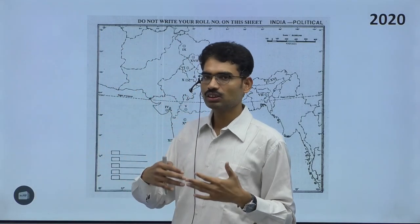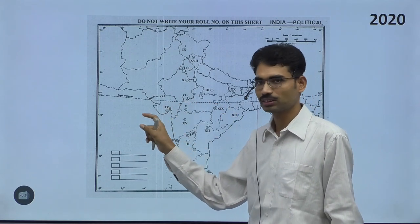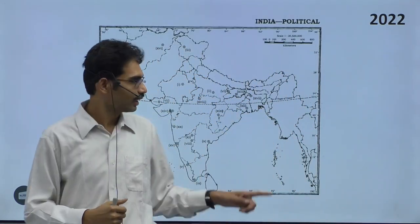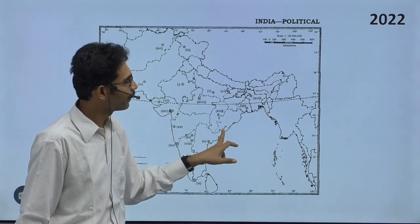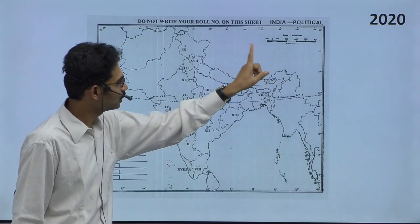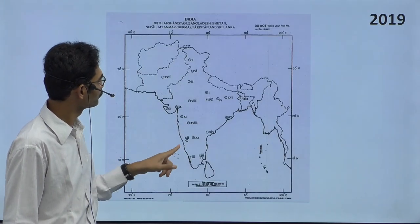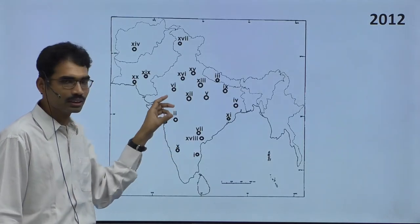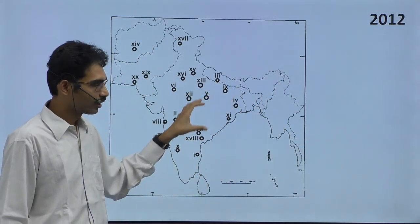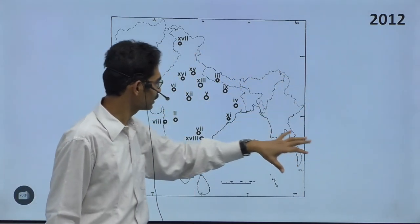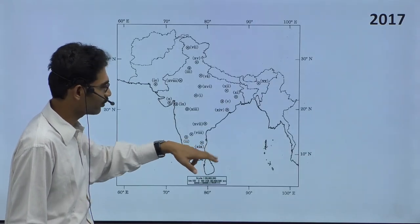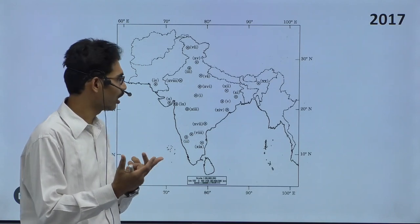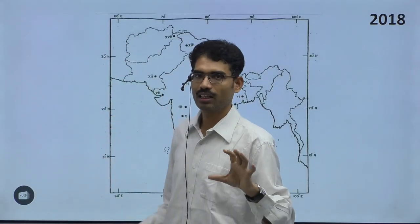That is why UPSC changes the format. One time it gives a simplified version with state boundaries — that was in 2020. In 2022, even the Tropic of Cancer was given. But in 2021, no boundaries at all. In 2020, both the Tropic of Cancer and state boundaries were given. From 2012 onwards, we have reference — this kind of map model first appeared in 2012. Earlier they were not giving any political boundaries, which made it a bit challenging for students to identify in which state a boundary site falls.